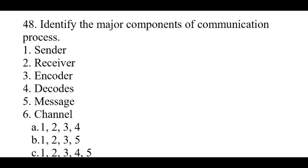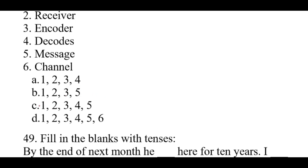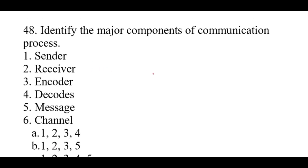Question number 48: Identify the major components of the communication process: 1. Sender, 2. Receiver, 3. Encoder, 4. Records, 5. Messages, 6. Channels. The major components are option D: 1, 2, 3, 4, 5, 6 — all are the major components of the communication process.